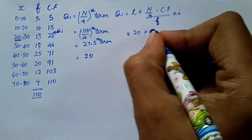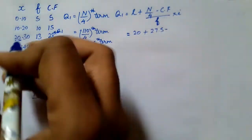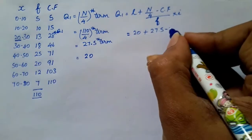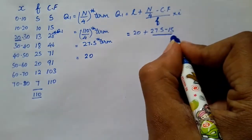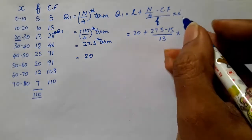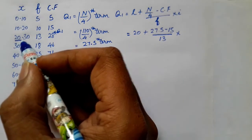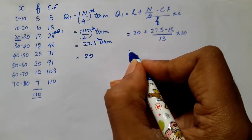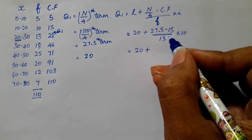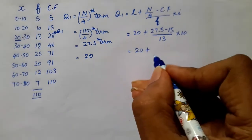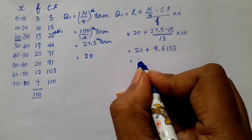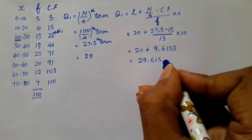Now if we add cf, we can write the sum. l will be 20 plus n by 4: 27.5. In the row, cf is 15. In the row, frequency is 13. i is the length of the class interval 20 to 30. So 20 plus 27.5 minus 15 is 12.5 divided by 13 into 10, which is 9.6153. So this one the total is 29.6153.